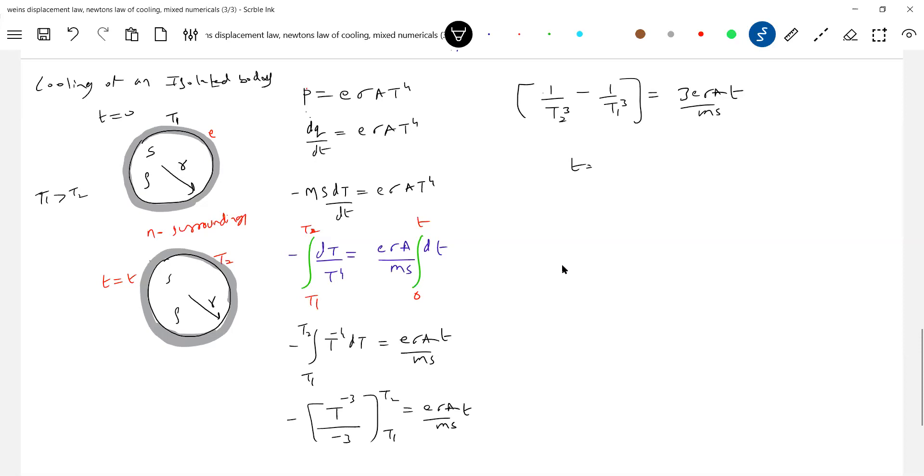ms. There's the time taken for it to cool. Let me write in proper form: ms by 3 e sigma A. Okay, now what is m? m will be density times volume. s is specific heat, 3 e sigma, what is A? Surface area 4 pi r square.